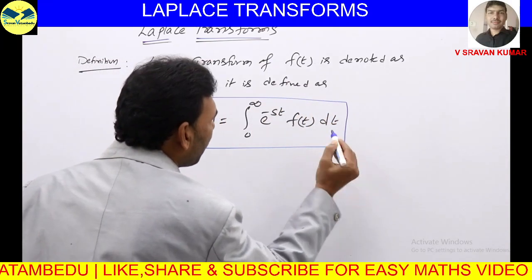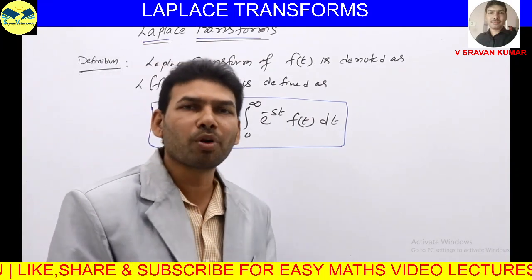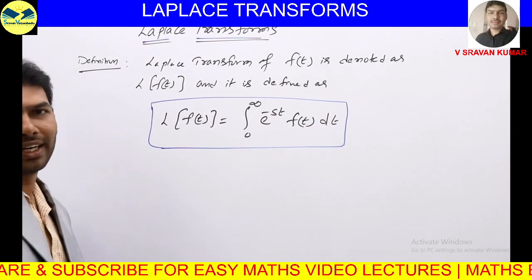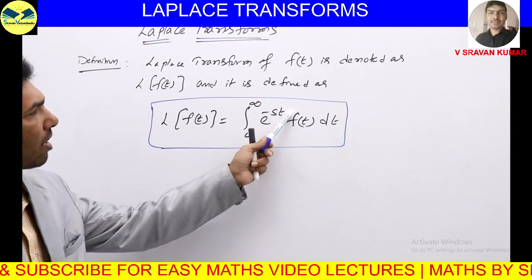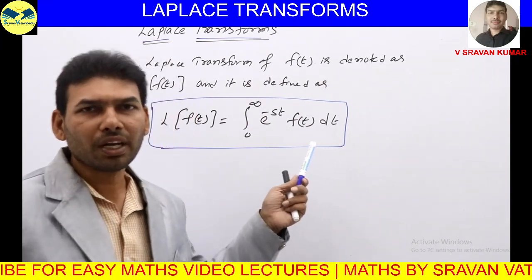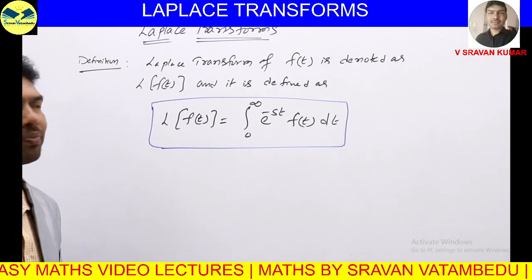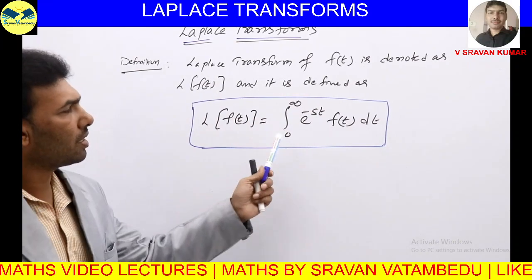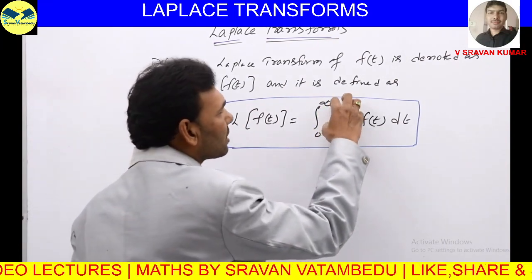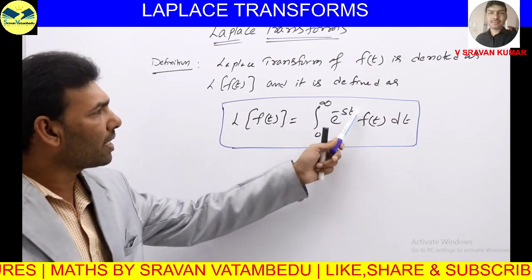Laplace transform of a function F(t) is that improper integral from 0 to infinity of e^(−st) · F(t) dt. Here, e^(−st) is called the kernel of this integral. Depending on the kernel, we decide which transform we are doing: if the kernel is e^(ipx), that is Fourier transform; if it involves a summation from n=0 to infinity, that is Z transform. For Laplace transform, the kernel is e^(−st).